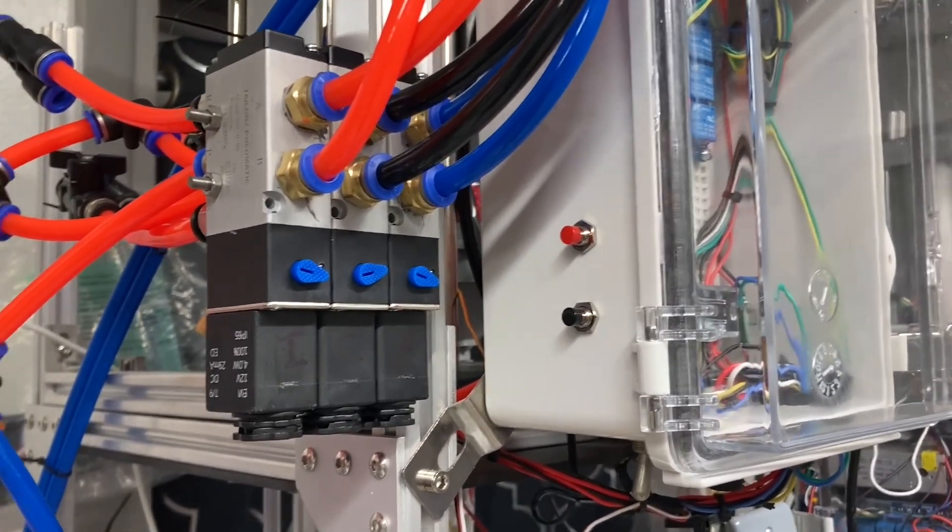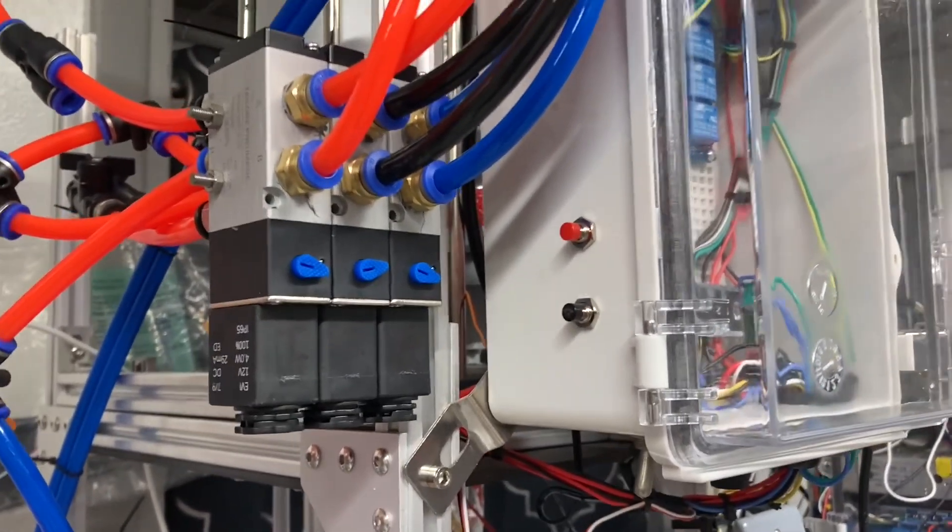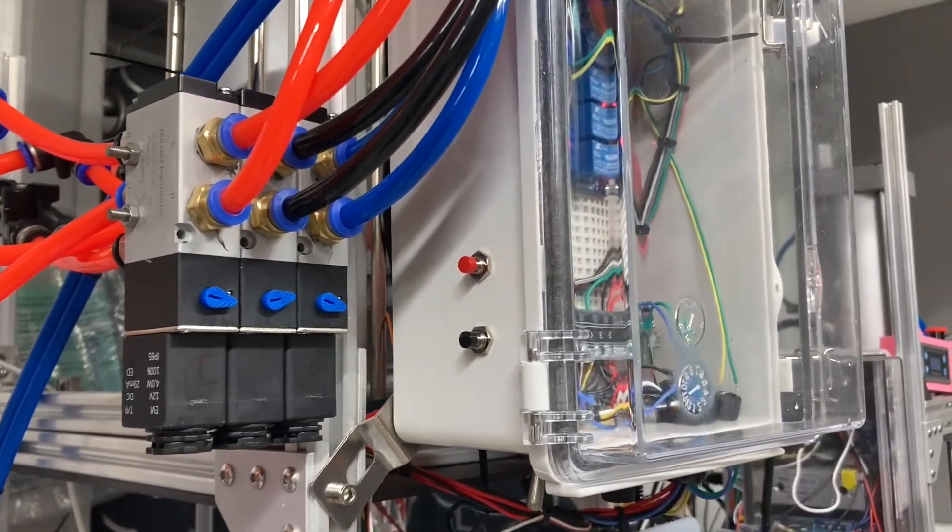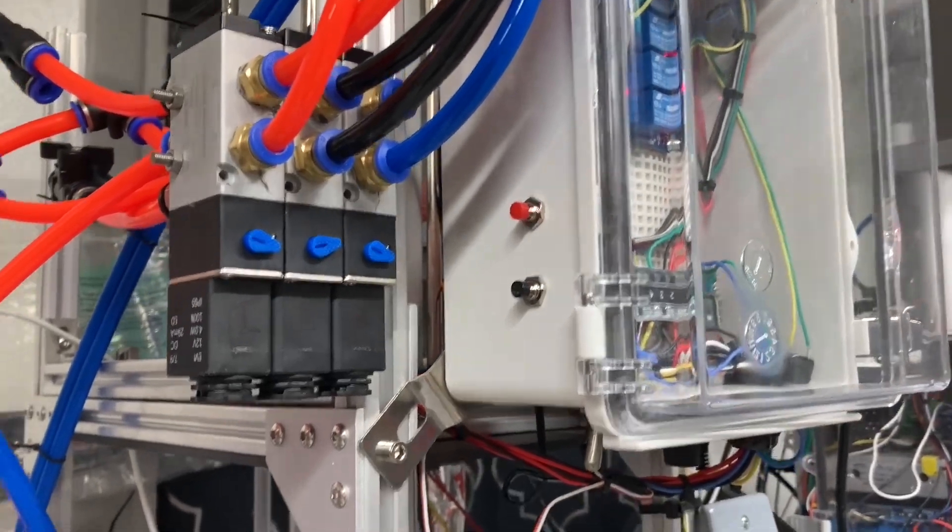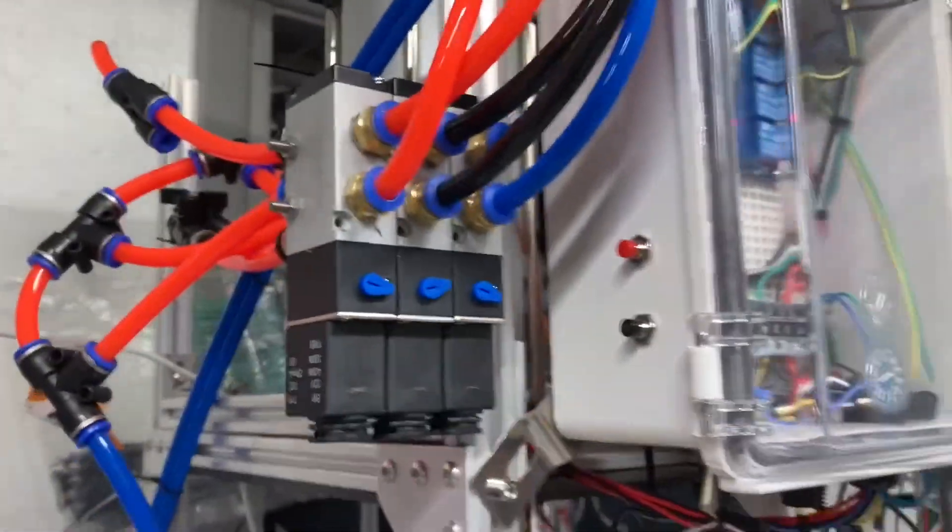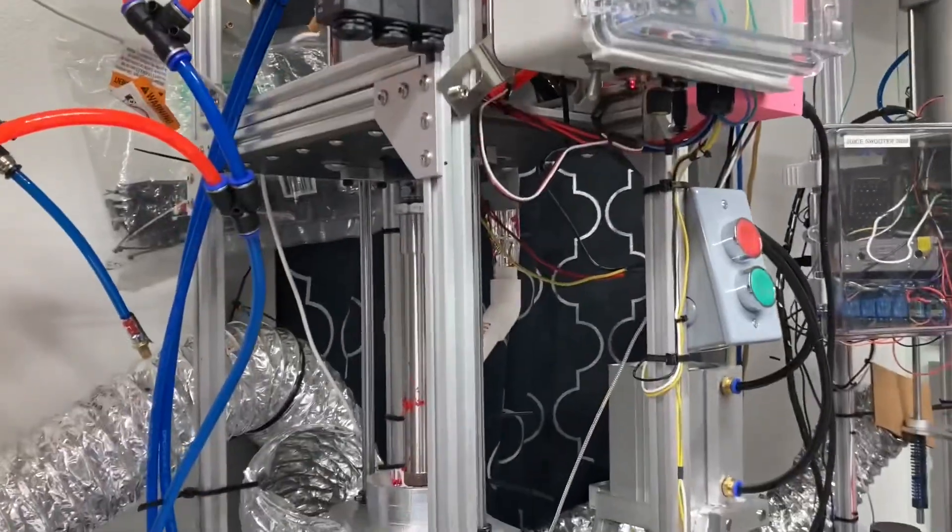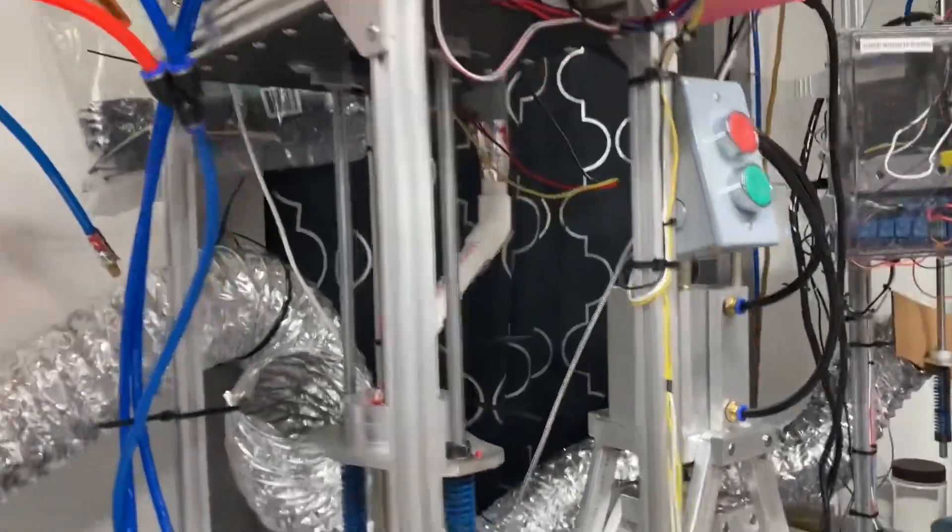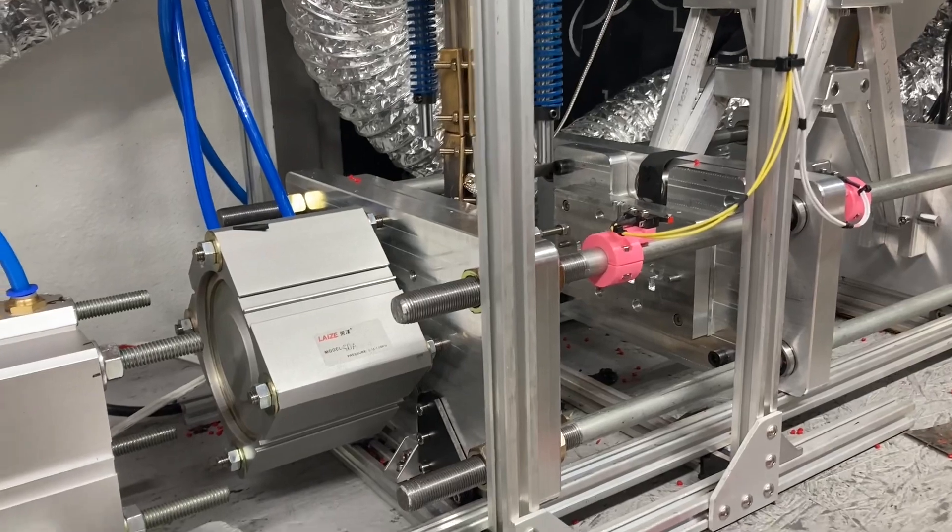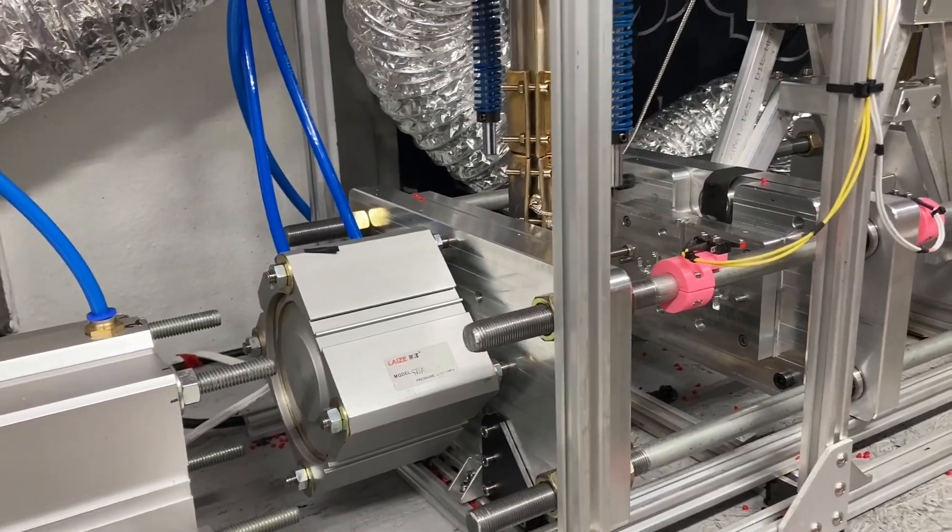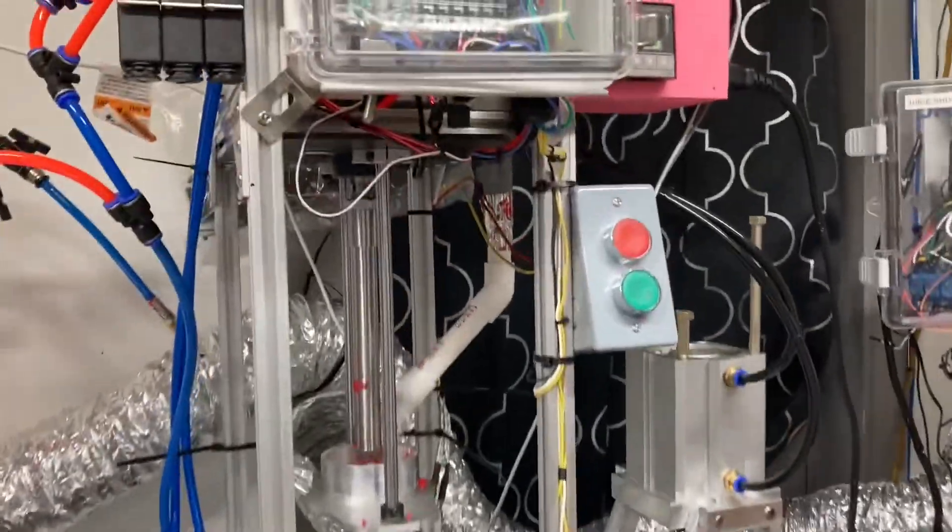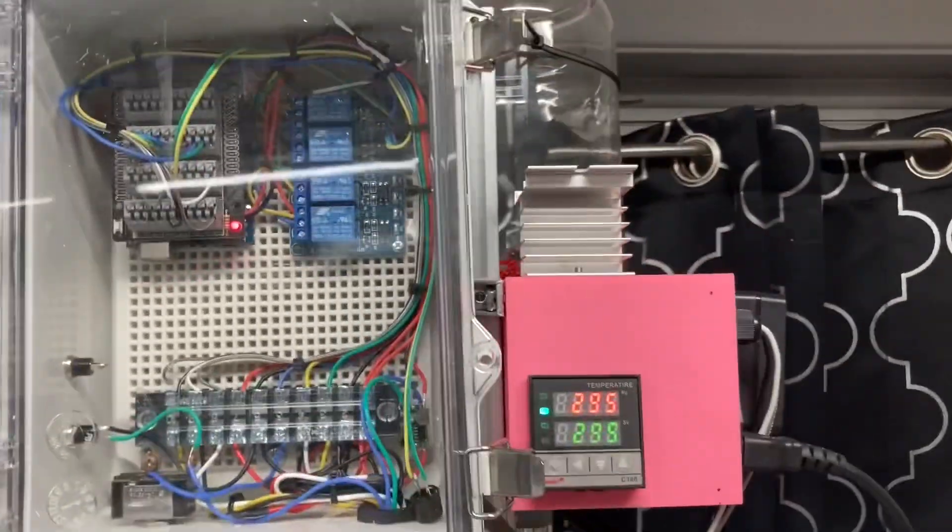From there we have our 12 volt pneumatic electric over pneumatic control valves. Pretty straightforward stuff. Basically 12 volts opens and or closes the valve. And then you have flow control valves which you guys are familiar with on the standard manual machine, but I basically control the rate at which the clamp opens and then the rate at which the ejector cylinder works. All that stuff is just fine tuning and adjusting.